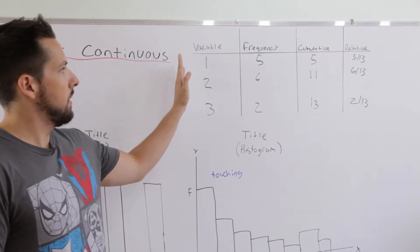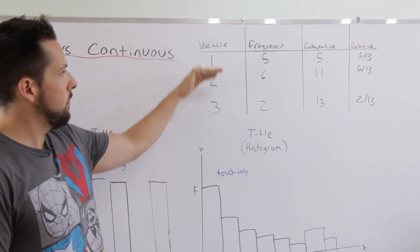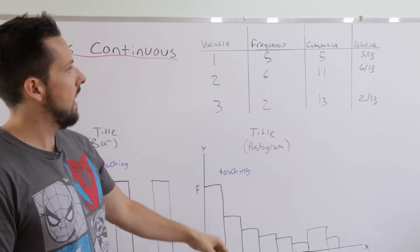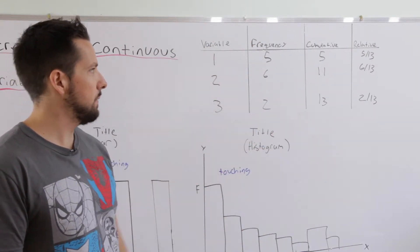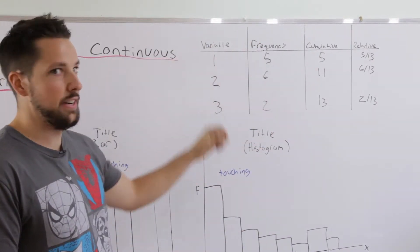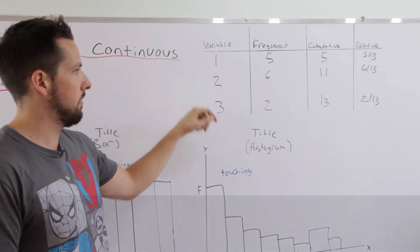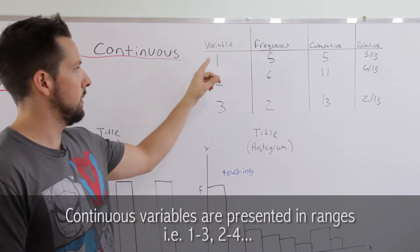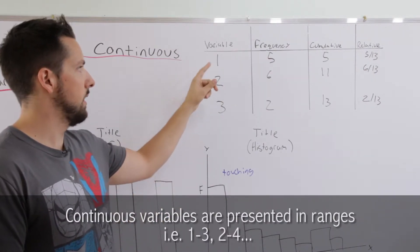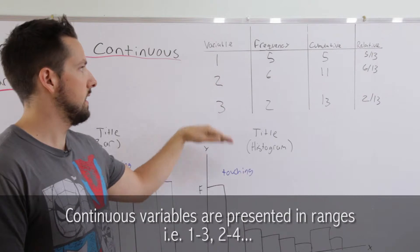Here's the table that you're going to want to make. You're going to have your variable on the x-axis right here and your frequency on the y-axis. Now this is a discrete variable and you can tell because it's got single values here, one, two or three. If this was a continuous variable, you would have ranges of data like one to three, two to four, et cetera.